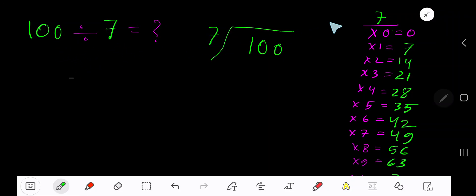100 divided by 7. Here 7 is the divisor, so we need the multiplication table of 7. 7 times 0 is 0, 7 times 1 is 7, 7 times 2 is 14, 7 times 3 is 21. To find the multiplication table of 7, just add 7 to the previous step: 0 plus 7 is 7, 7 plus 7 is 14, 14 plus 7 is 21, 21 plus 7 is 28, 28 plus 7 is 35. This process continues.